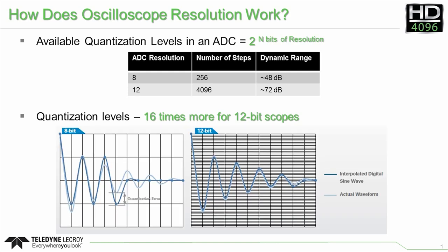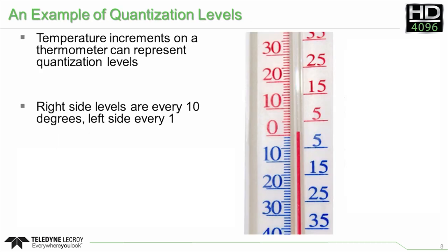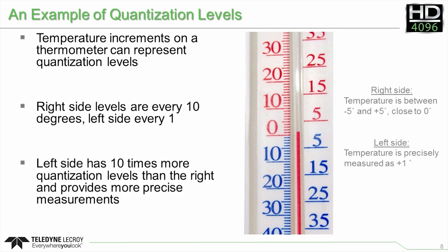This additional resolution enables 12-bit oscilloscopes to display waveforms that are more precise and show more details. This basic example of a thermometer can be used to understand quantization levels and their impact on measurement precision. On the right side of the thermometer, temperatures are displayed in 10-degree increments; on the left, in 1-degree increments. These increments represent the quantization levels of an ADC. The left side has 10 times more quantization levels, meaning the temperature can be read as precisely as 1 degree. Looking only at the lower resolution scale, the temperature just appears to be close to 0 degrees and cannot be measured precisely.